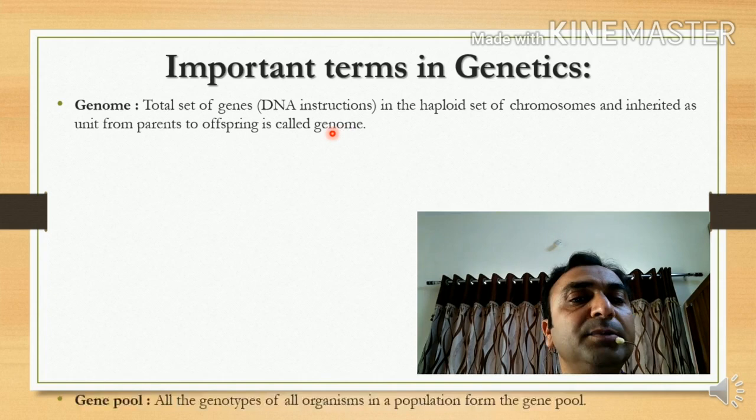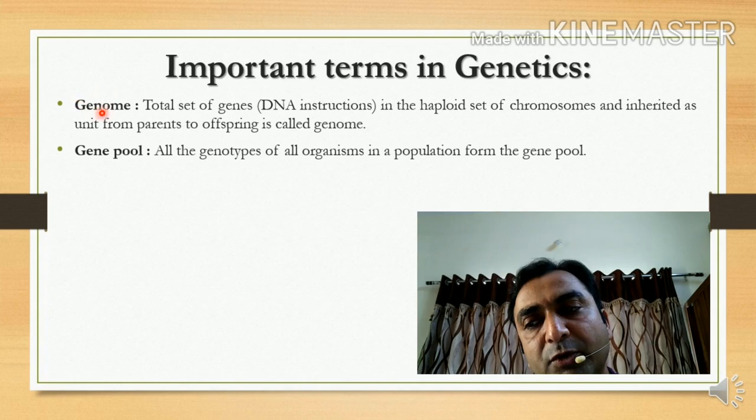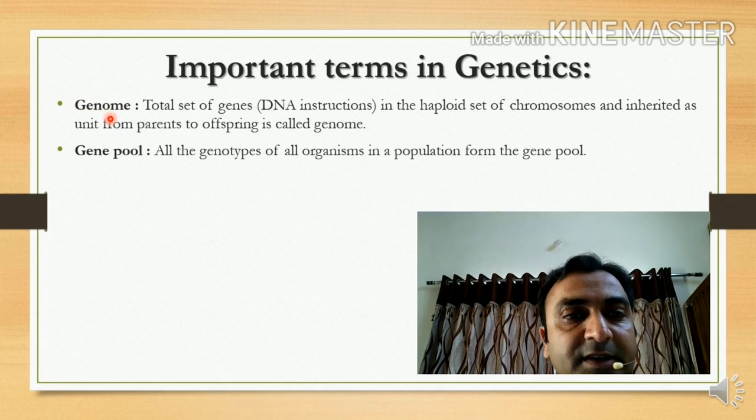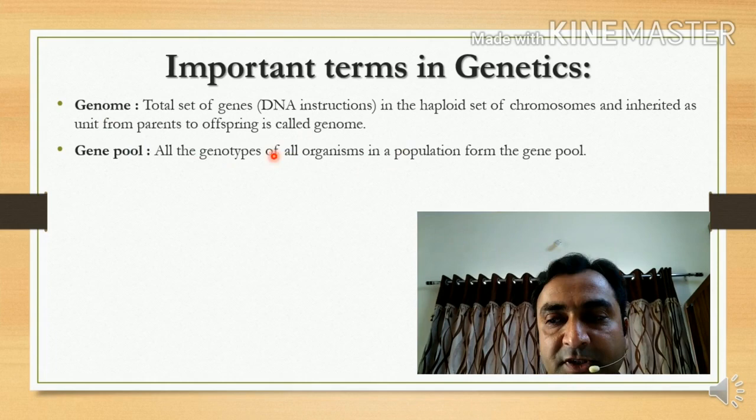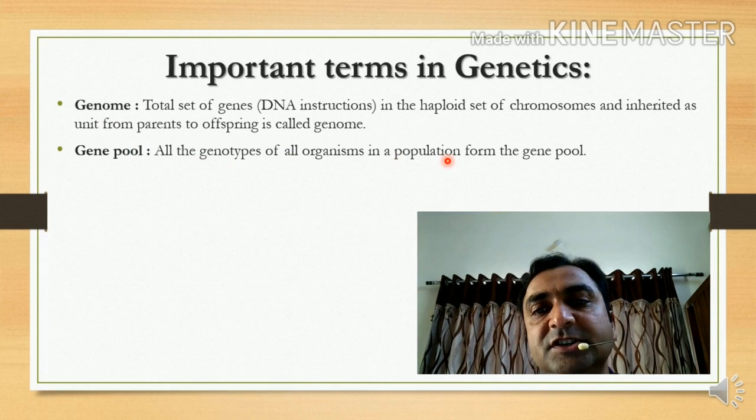The next term is gene pool. One individual has a genome; similar genomes may be present in other individuals of the same population. So all the genotypes of all organisms of a similar population form the gene pool.